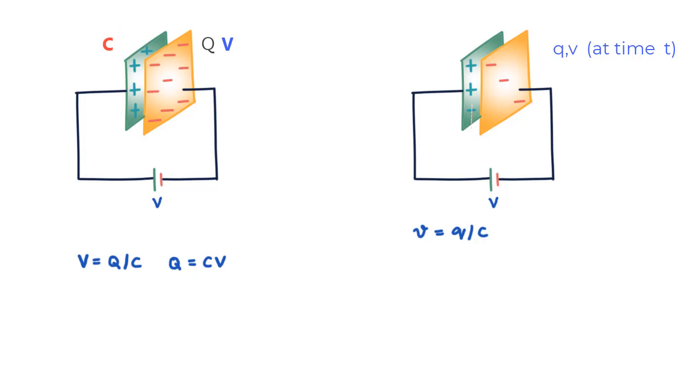So at this time t we can say that the work done to move an additional charge dq is v·dq which can be written as (q/C)·dq. As a side note, I hope you recall that the potential difference between two points V is equal to the work done in moving a unit charge between the two points, and therefore we have the equation dW = v·dq.